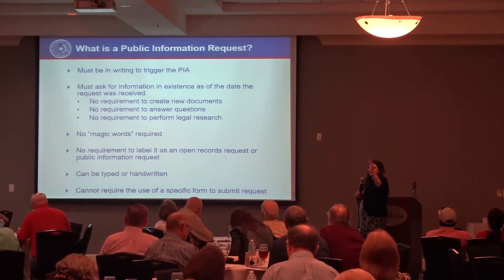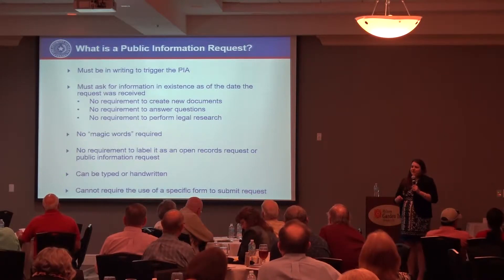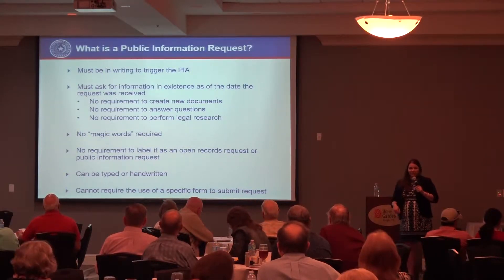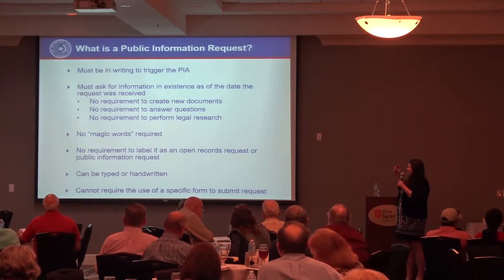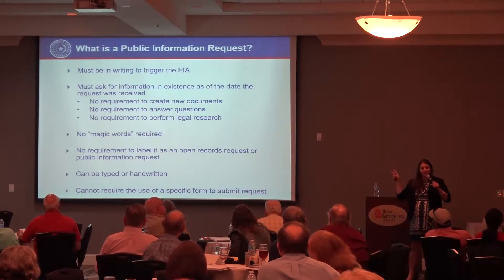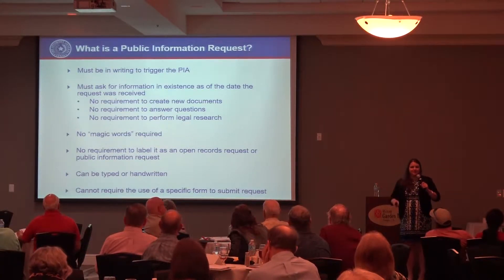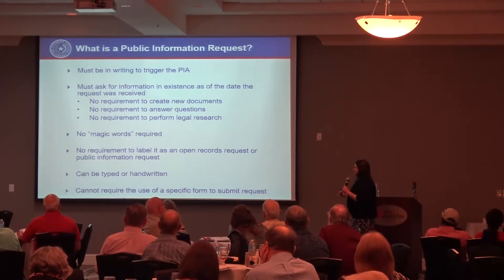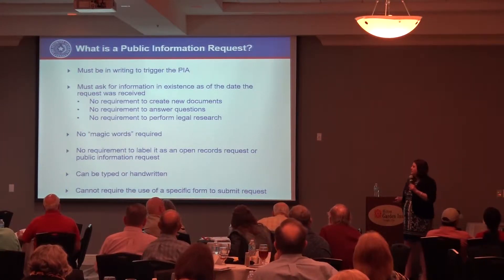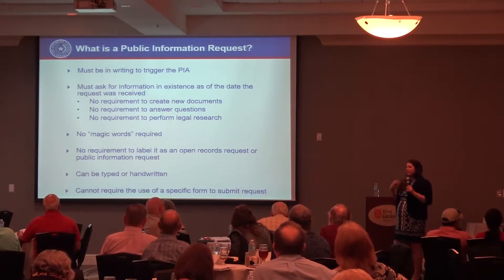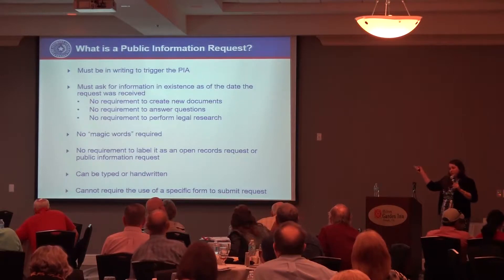Now that we've gone over what information is subject — essentially all the information you have — and that you are a subject governmental body, what triggers the Public Information Act? You have to have a request. There are only two requirements: it needs to be in writing, and it must ask for information in existence at the time of the request. That's it. You don't have to create new documents or do legal research.